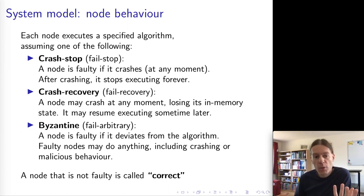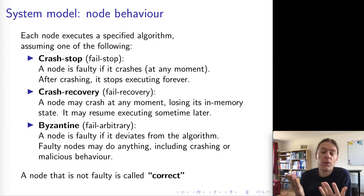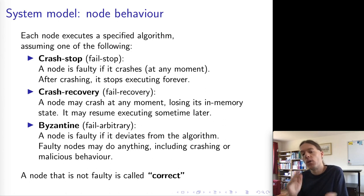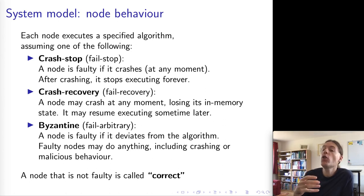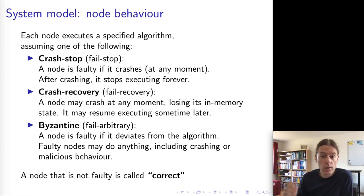A piece of terminology here: we can always categorize a node as either faulty or correct. A node is faulty if it crashes, or in the Byzantine model, if it deviates from the algorithm. A node is correct if it's not faulty. Importantly, one node does not necessarily know whether another node is correct or faulty, and we will come to the problem of fault detection in a little while.